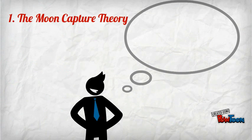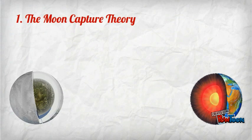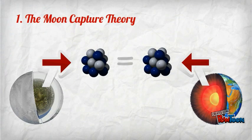However, this theory has some major problems. The most serious is the geochemical similarity of the Earth and moon. The two bodies have nearly identical oxygen isotope ratios, suggesting that they formed from the same raw material.